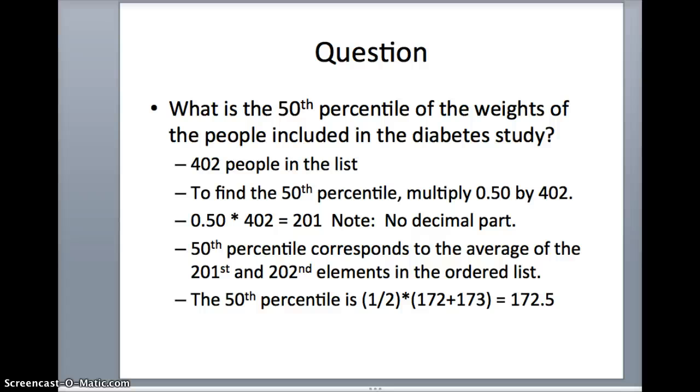If you get a situation like that, you have to take the average of the 201st and 202nd elements in the list. So you want to find that average. We're going to look for 201 and 202.